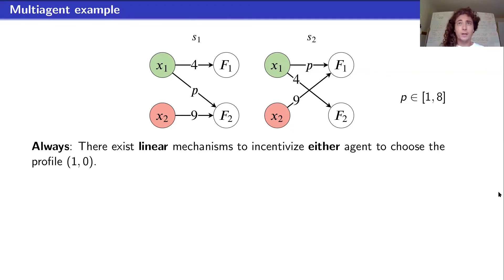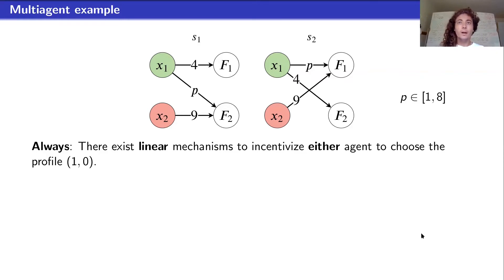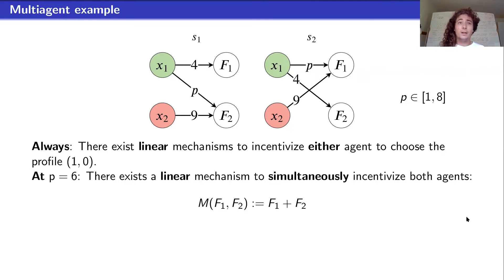First observation: there exists a linear mechanism that will incentivize either agent individually to choose the profile (1,0). If we just care about S1 and want them to spend all effort on x1, we just say the score equals F1 — this is monotone, this is linear, all good. But that won't work for S2. If P equals 6, you can work out that there is a linear mechanism that will simultaneously incentivize both agents to invest effort only into x1 — just weight the two features equally. You can check that the marginal benefit of x1 is higher than the marginal benefit of x2.